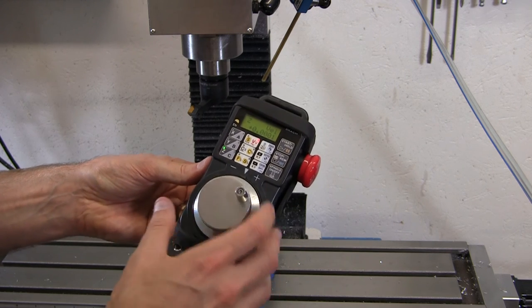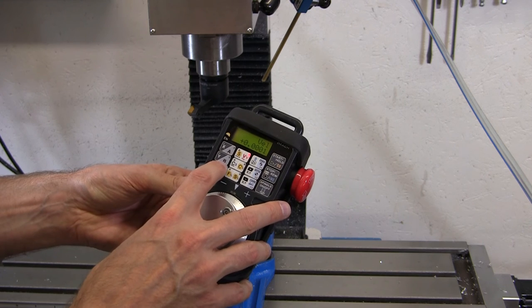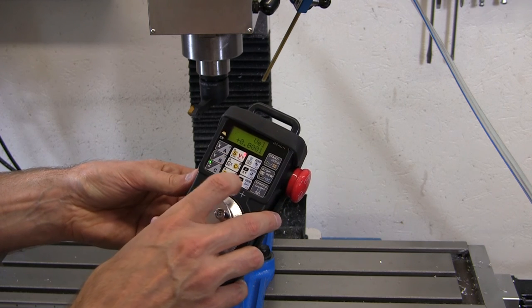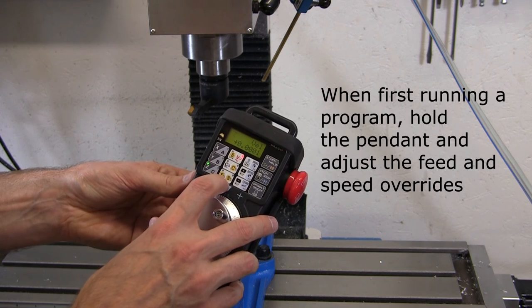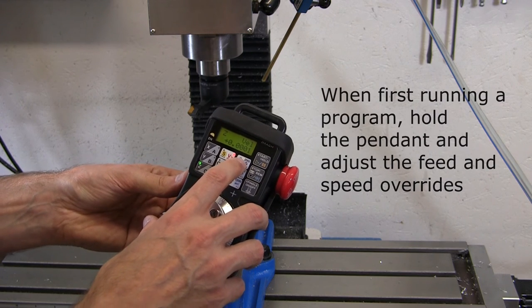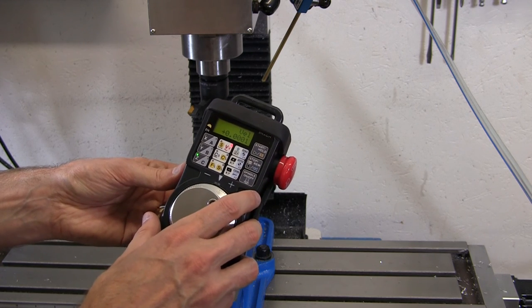What I've used most in this pendant is the axis selection, the velocity mode, the feed and speed override, and the touch-off or zero button.